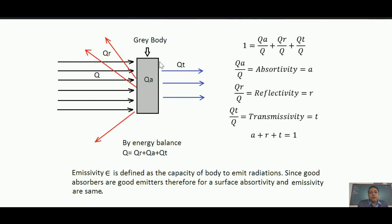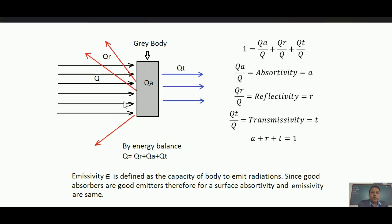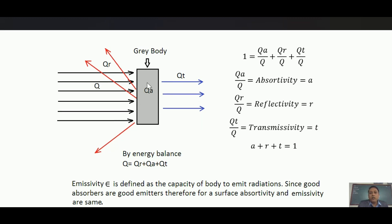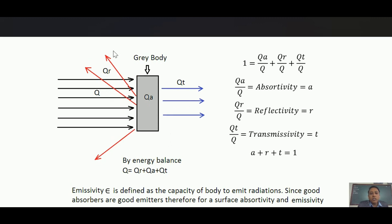First of all, we will recall some concepts of radiation heat transfer. Suppose this is a body on which radiation is falling — Q amount of watts are falling on this body. Then with those radiations, three things can happen: some radiation are reflected back, some are absorbed, and some are transmitted — they are just passing through. The reflected amount is Qr, absorbed is Qa, and transmitted is Qt.